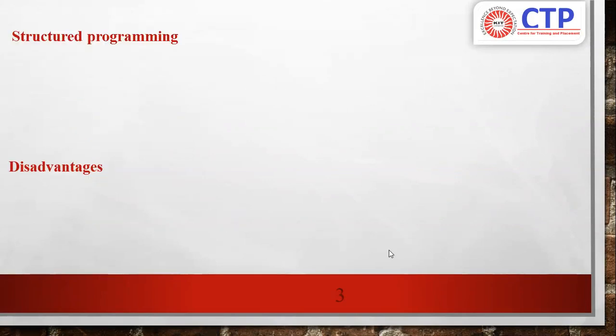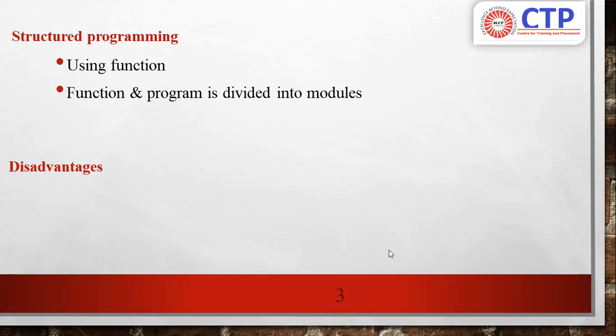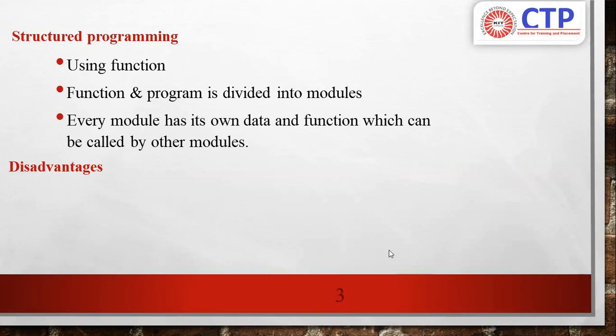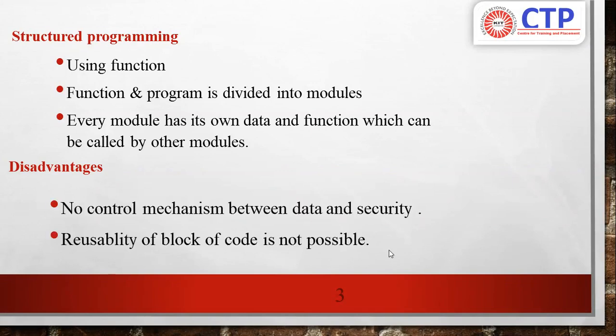Before looking at the features in detail, we will find out why we need object oriented programming. For that, we need to know the disadvantages of structure oriented programming. It uses functions, and each program is divided into modules. Every module has its own data and functions which can be communicated with the other modules, which means there is a lack in security. There is no control mechanism between data and security, and code reusability is not possible. So these are the disadvantages of structure oriented programming. Now we go with object oriented programming.